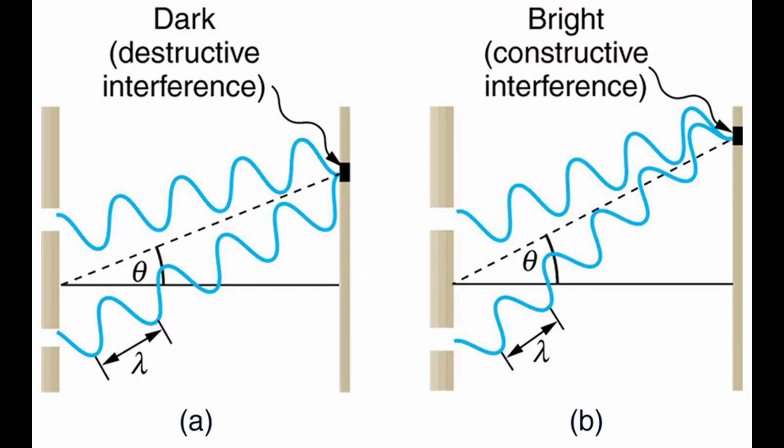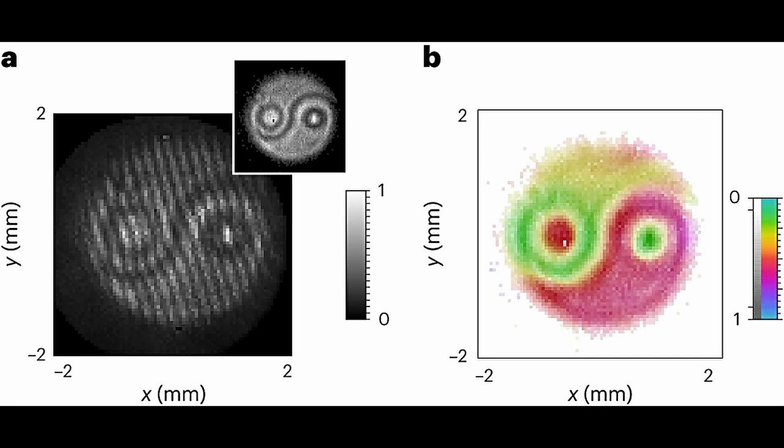The magic happens through interference patterns, where light waves merge and cancel each other out. In this case, an entangled photon state and another known state create a mesmerizing pattern. Capturing this pattern with precision, researchers reveal a stunning yin-yang image that encapsulates the entangled dance of photons.